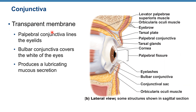Conjunctiva is a transparent membrane and we have two parts: palpebral conjunctiva, which lines the eyelids — so inside your eyelids you would find palpebral conjunctiva — and bulbar conjunctiva, which covers the white of the eyes. Conjunctiva produces lubricating mucus secretion for eye protection.